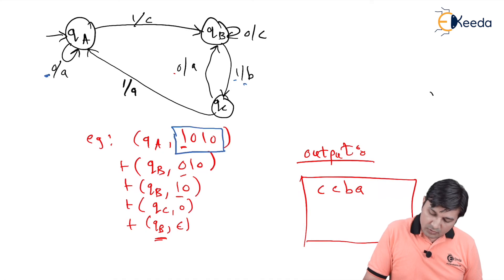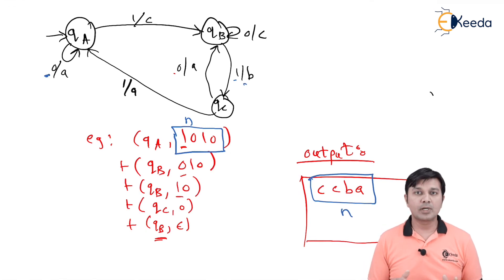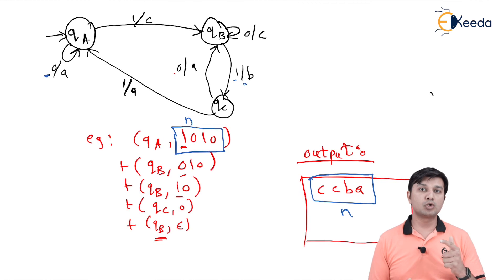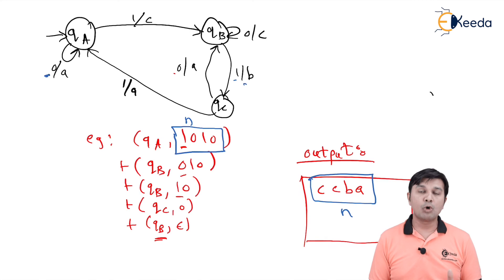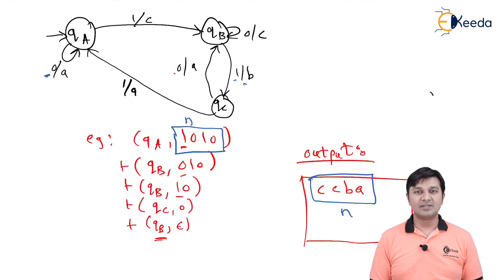The important conclusion: in Mealy machine, if the length of the input sequence is n, the output sequence length is also n. This contrasts with Moore machine, where if the input length is n, the output length is n+1. That's a key difference between the two. With this we complete the working of the Mealy machine. See you in the next session on distinguishing Moore and Mealy machines. Thank you.